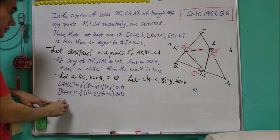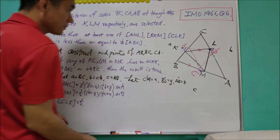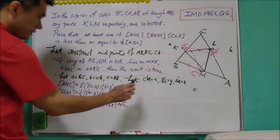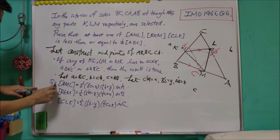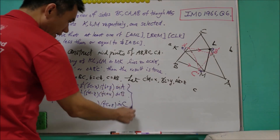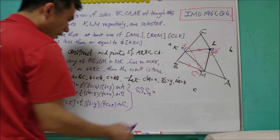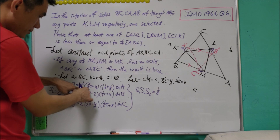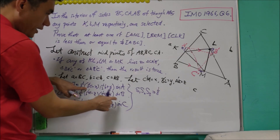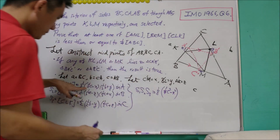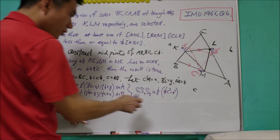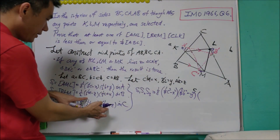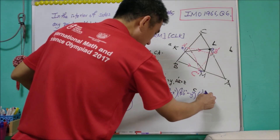Now s1 times s2 times s3 equals one-eighth times (1/4)(c² - x²) times (1/4)(b² - y²) times (1/4)(a² - z²) times sine A times sine B times sine C.